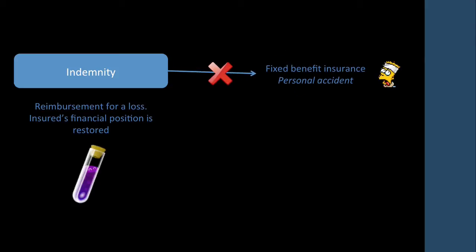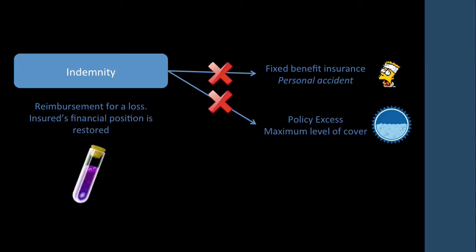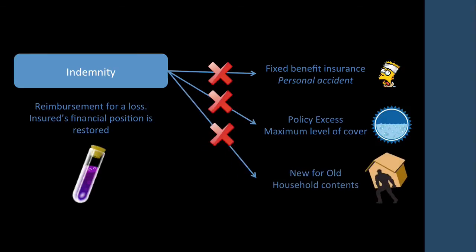What's not indemnified is personal accidents, policy excess, or when there's a maximum level of cover, and when your household contents get stolen because they're traded new for old. So even though they're getting benefits, they are not indemnified to their exact financial position. In some cases it might be better off with new for old, or in some cases it could be worse off — a family heirloom can't be replaced, or the policy excess means you dip out a little bit as well.